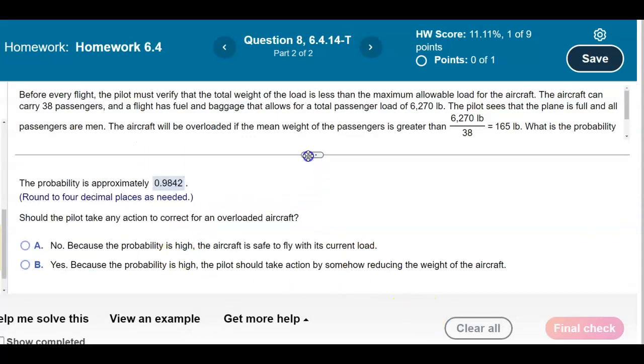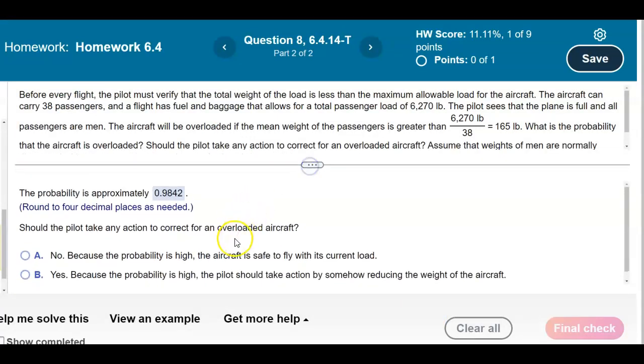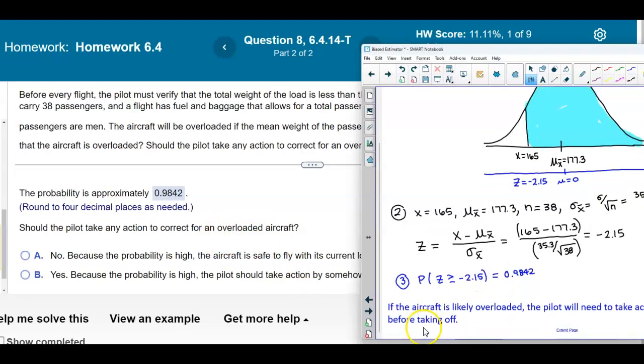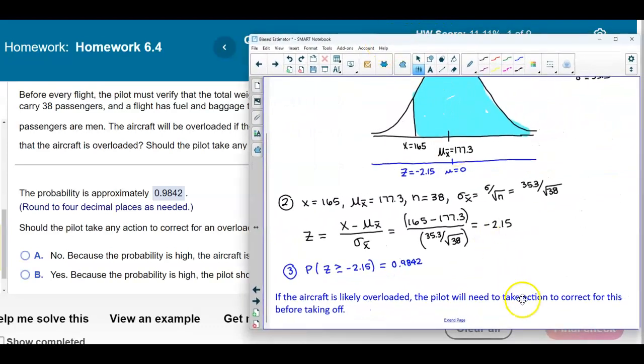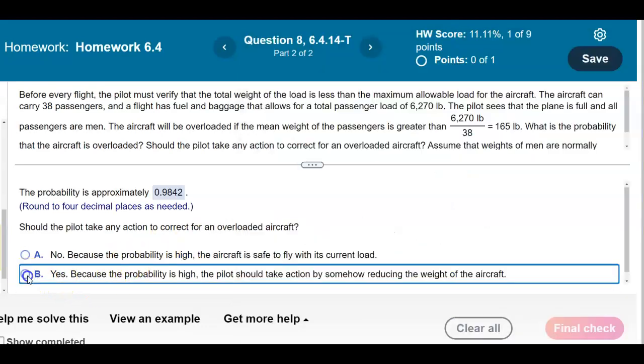Should the pilot take any action to correct for an overloaded aircraft? If the aircraft is likely overloaded, the pilot will need to take action to correct for this before taking off. If we convert that to a percent, that's 98.42 percent. That probability is quite high. So yes, because the probability is high, the pilot should take action by somehow reducing the weight of the aircraft.